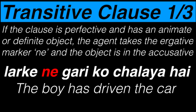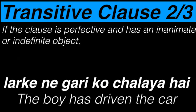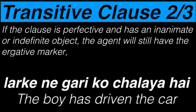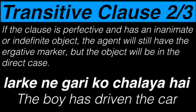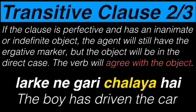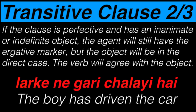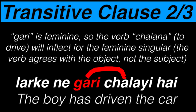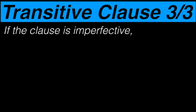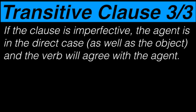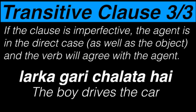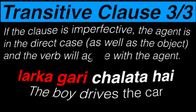If the clause is perfective and has an inanimate or indefinite object, the agent will still have the ergative marker but the object will be in the direct case. The verb will also agree with the object of the sentence — since gari is feminine, the verb chalana will inflect with a feminine singular. And if the clause isn't perfective, the agent is in the direct case and agrees with the verb. We'd have larka gari chalata hai, in which both subject and object are in the direct case.